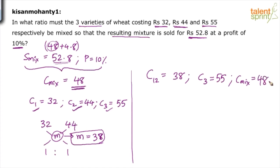Apply allegation rule now. So C12 is 38, C3 is 55, mixture is 48. So 55 difference 48 is 7 is to 38 difference 48 is 10. Which means C12 is to C3, the ratio should be 7 is to 10.